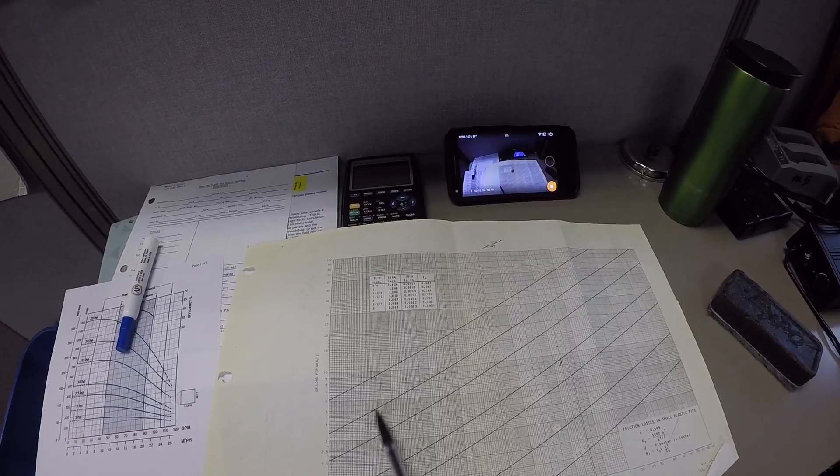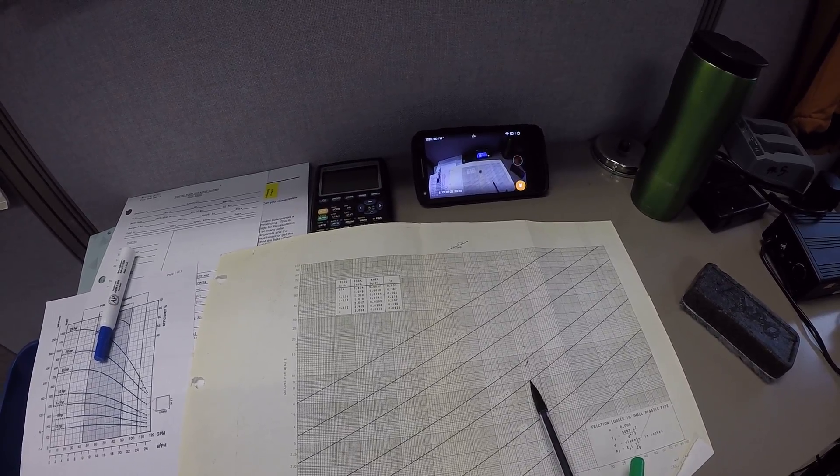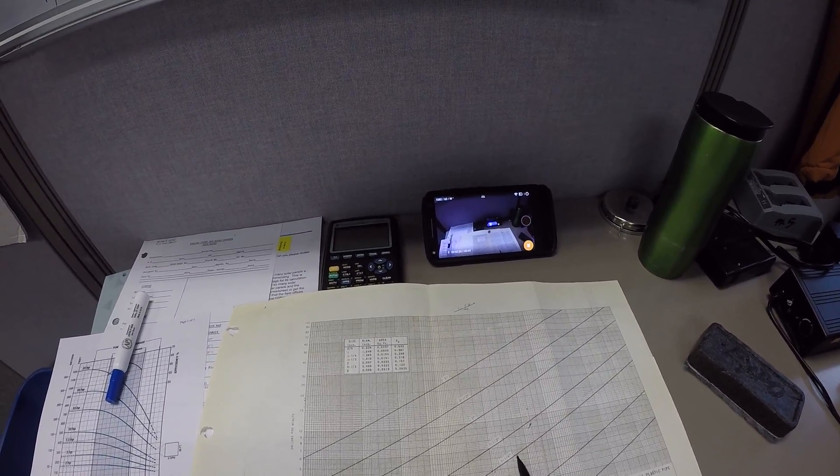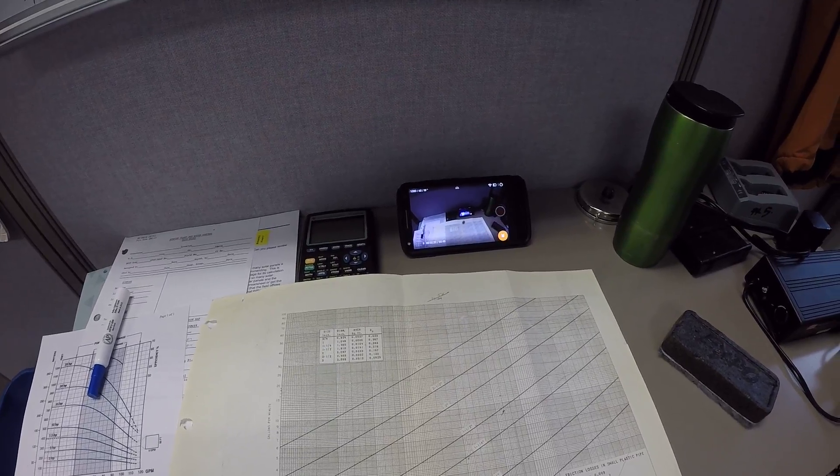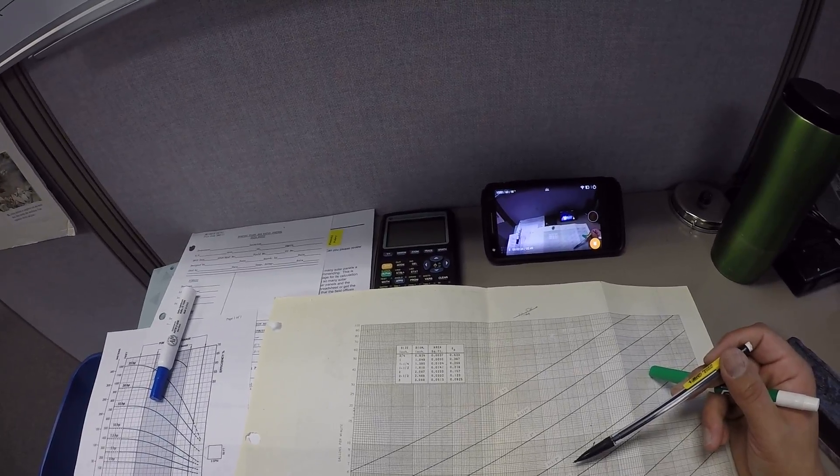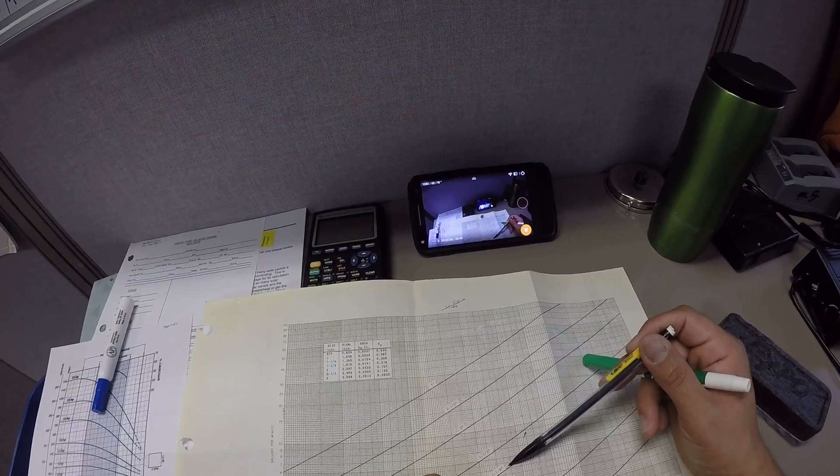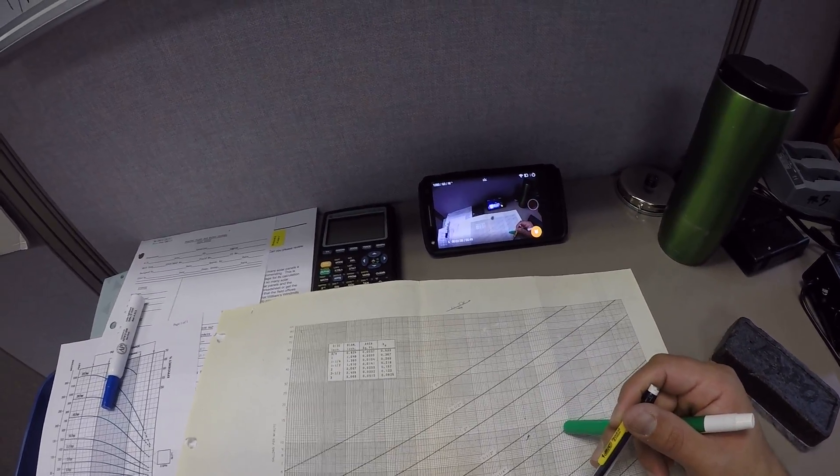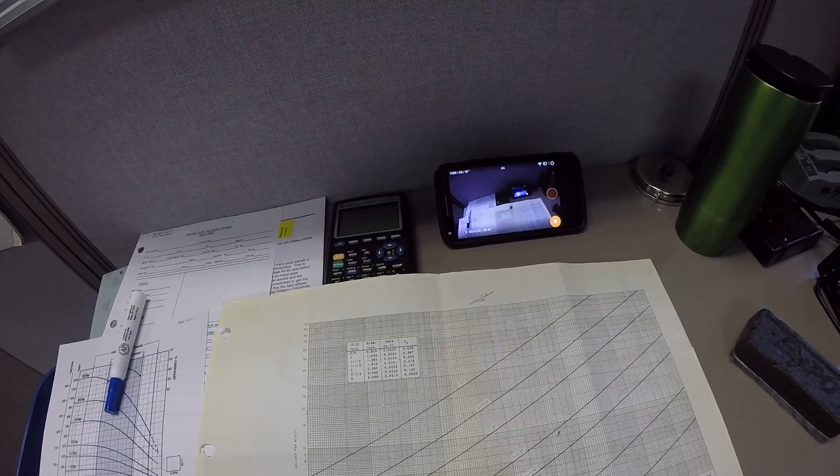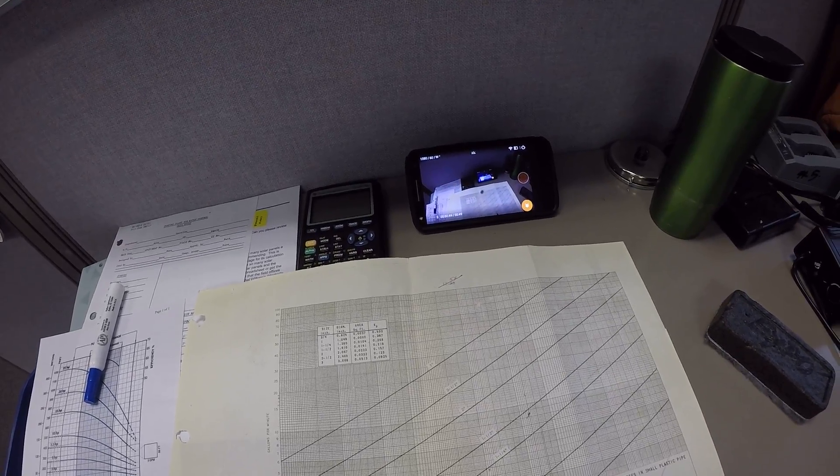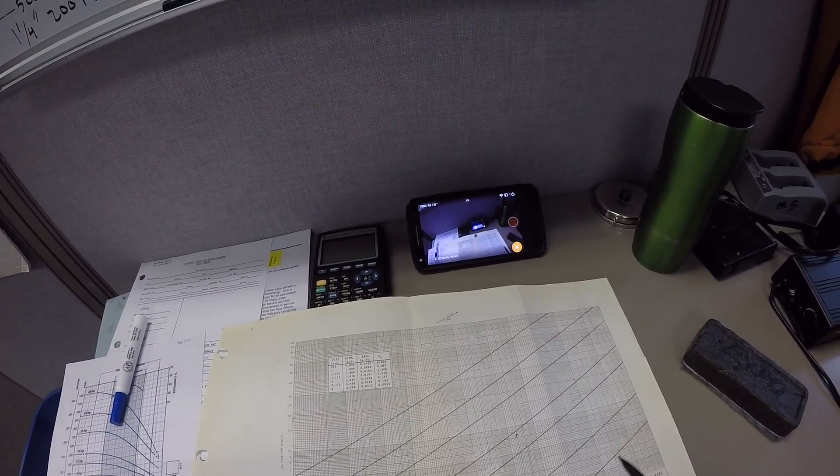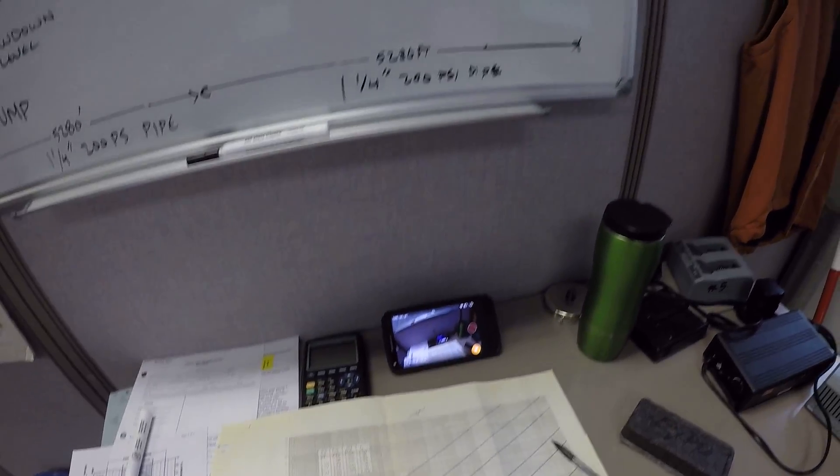5 GPM, and we're going to go across the inch and a quarter, and we're going to come down, 5, inch and a quarter, come down, so you got 5 feet of loss per thousand.